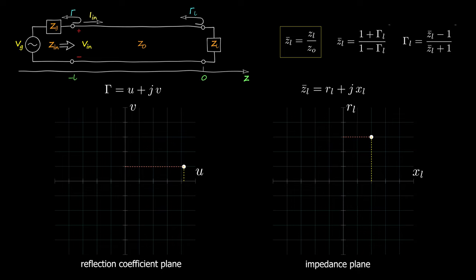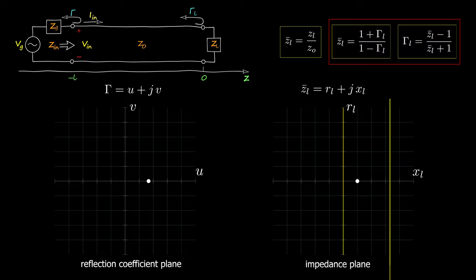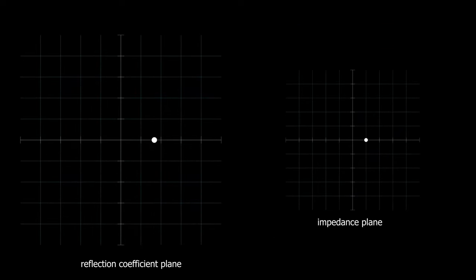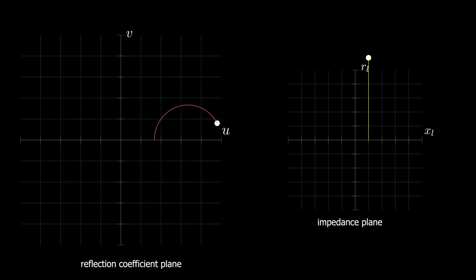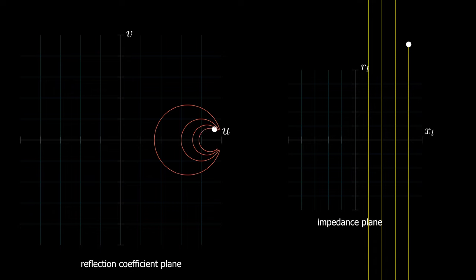Each load impedance corresponds to a reflection coefficient governed by this equation. If we have a load impedance represented by one point in the impedance plane, we have a corresponding reflection coefficient represented by one single point in the reflection coefficient plane. Changing that normalized impedance to a different value, we get a different reflection coefficient — this is what the reflection coefficient equation is telling us. There is a one-to-one relationship between impedance and reflection coefficient. In the impedance plane, each vertical line represents a constant resistance impedance. Moving along the line, we have impedance with the same resistance and variable reactance, which causes the reflection coefficient to move in a circle representing that resistance with a certain center and radius. Moving along a different line forms a different circle in the reflection coefficient plane that represents a different resistance.